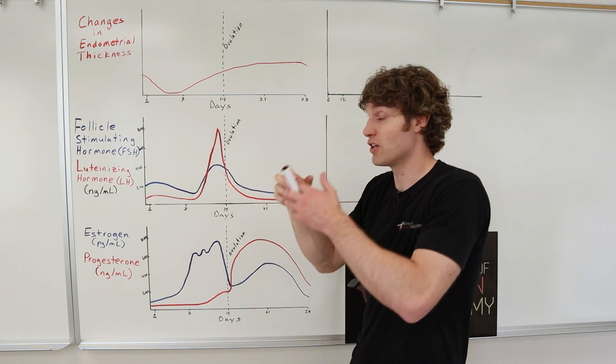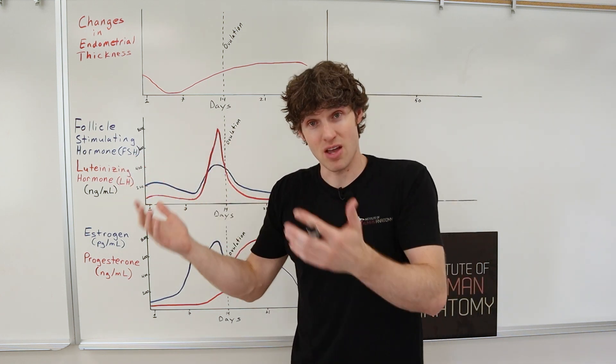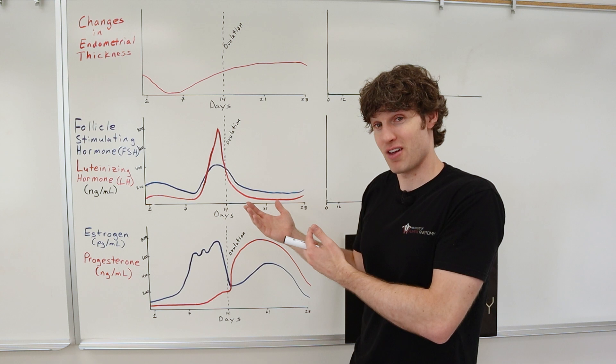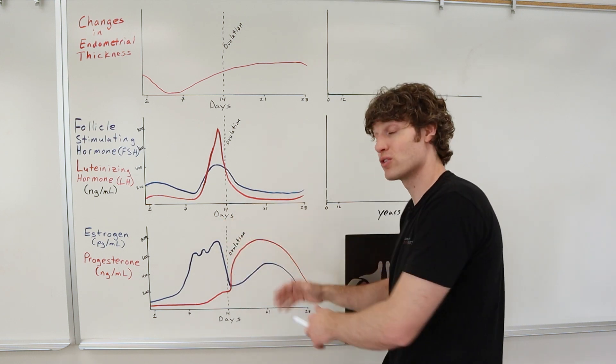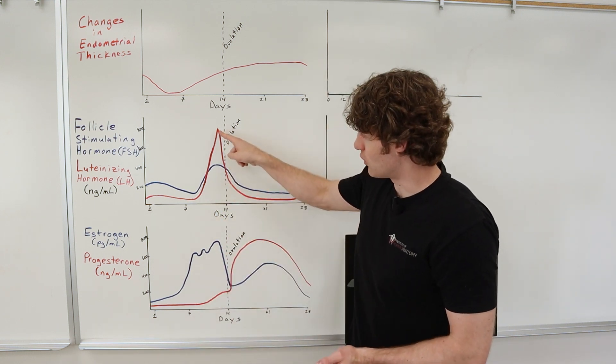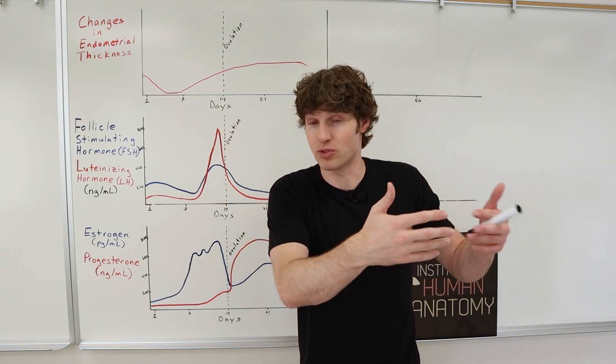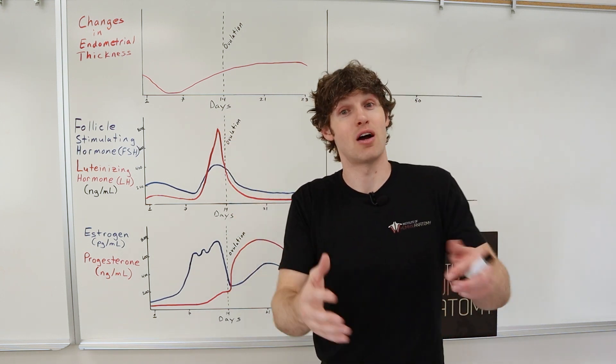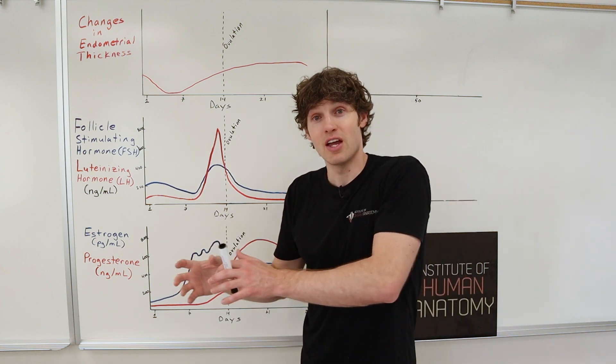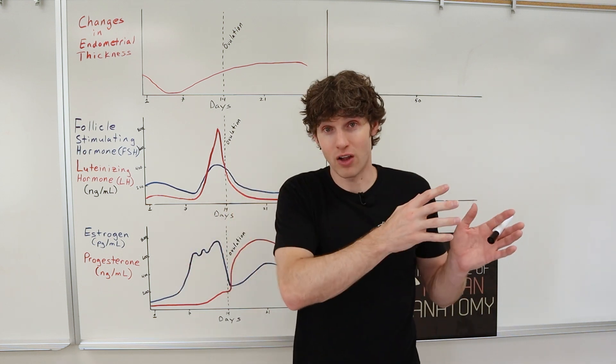That luteinizing hormone causes the follicle to rupture, the egg moves out of the ovary, and causes the next phase, which is the second half was the luteal phase, if you remember. Now, that big spike of luteinizing hormone converted the follicle that ruptured out the egg to become the corpus luteum. That corpus luteum is now still inside the ovary, was the follicle, became the corpus luteum.